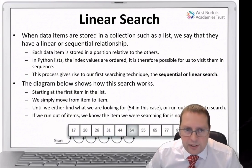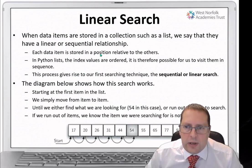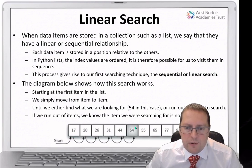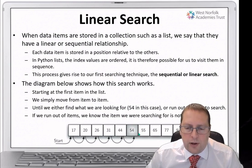With a linear search, what we actually do is we look along a list — linear meaning line. We look along the line of the list to say where something is. Each item is stored in a position: position 0, 1, 2, 3, 4, 5, 6, 7, 8, 9. We can look along the list to find the item. Here we're trying to find the number 54.